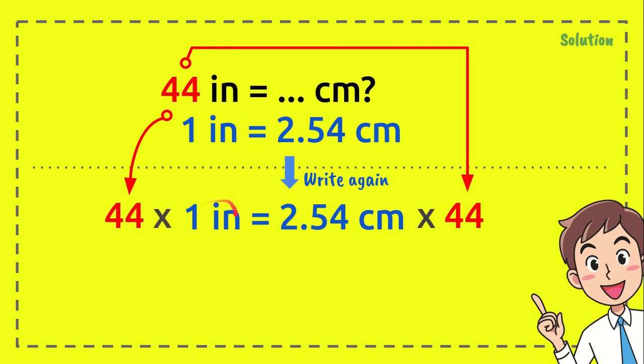Awesome. Now we put 44 here and here, because the only number we have from the question is this number only, 44. That's why we need to put here and here as well, because we have equal signs. It must be equal.